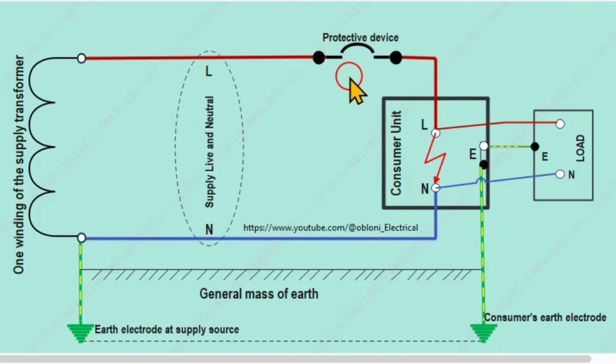So take note, the protective device will operate because the short circuit creates a very low impedance, and that is because there is a continuous link of conductors from the supply through the live conductor and back to the supply through the neutral conductor.